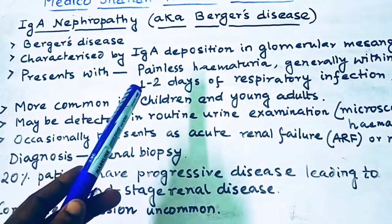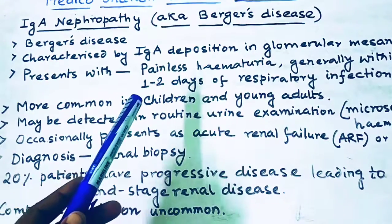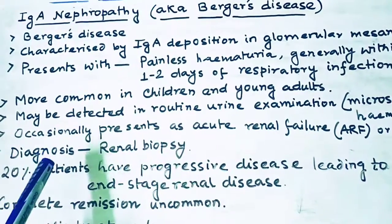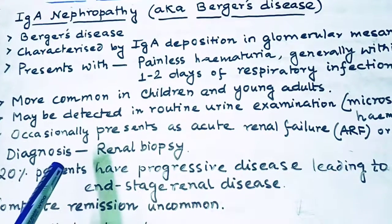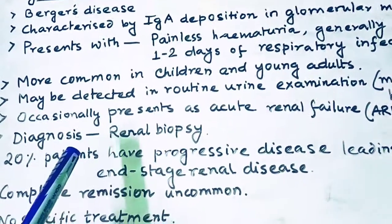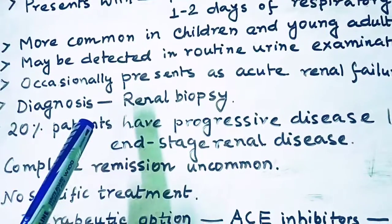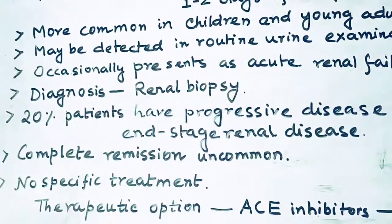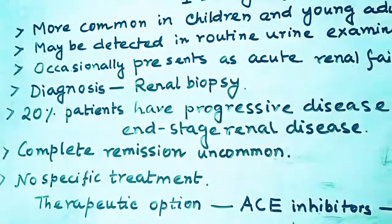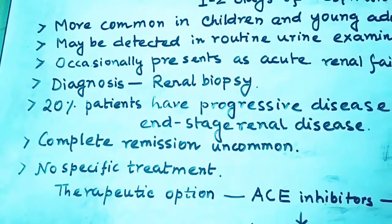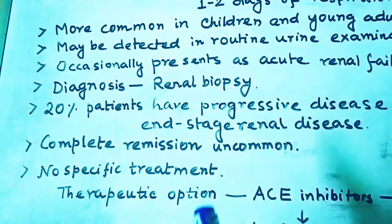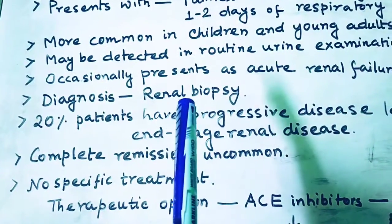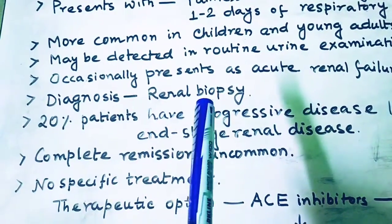Generally patients present with painless hematuria after 1 to 2 days of respiratory infection. For diagnosis, renal biopsy is very important and is performed to confirm IgA nephropathy.